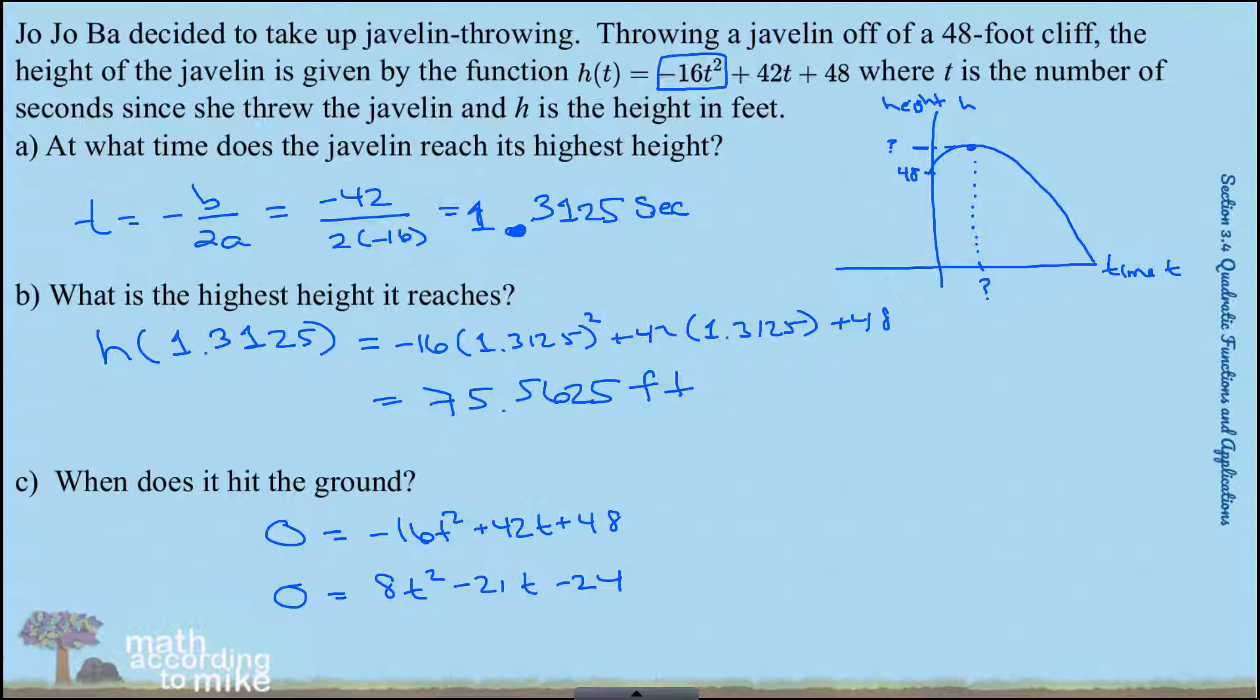You could use the original quadratic formula. So we're going to get t is equal to negative b plus or minus the square root of b squared minus 4 times a times c. There's a 24 there all over, that's a negative, that's an 8 down there just chilling.